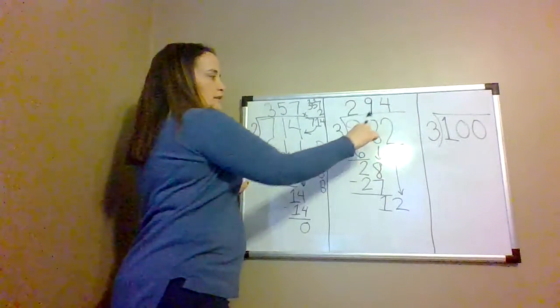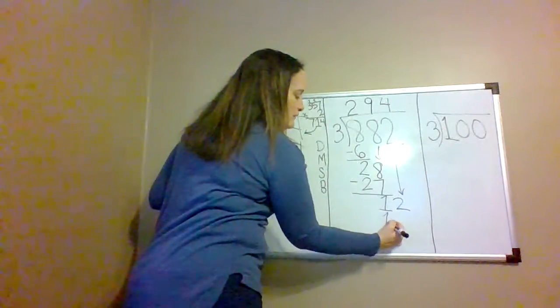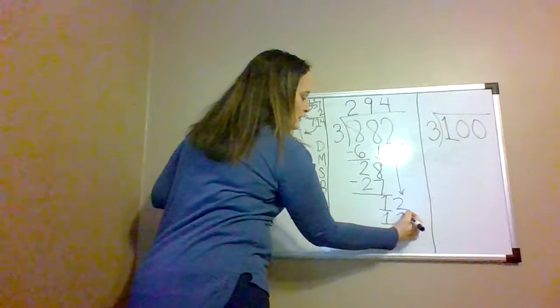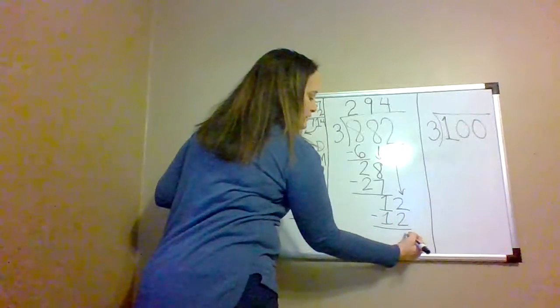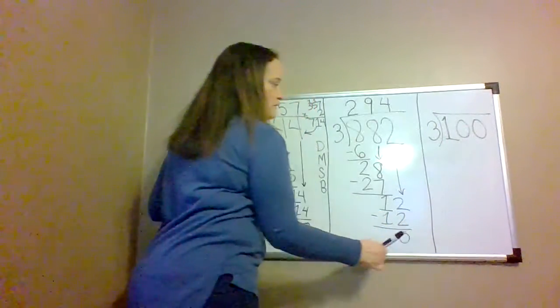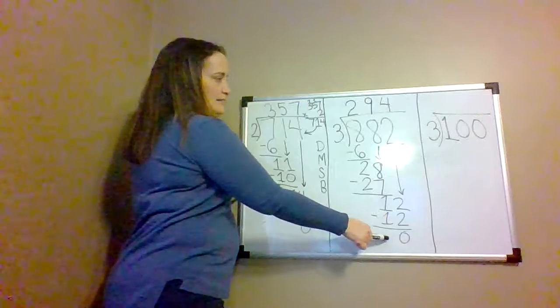3 times 4 equals 12. Then we subtract and we get 0.